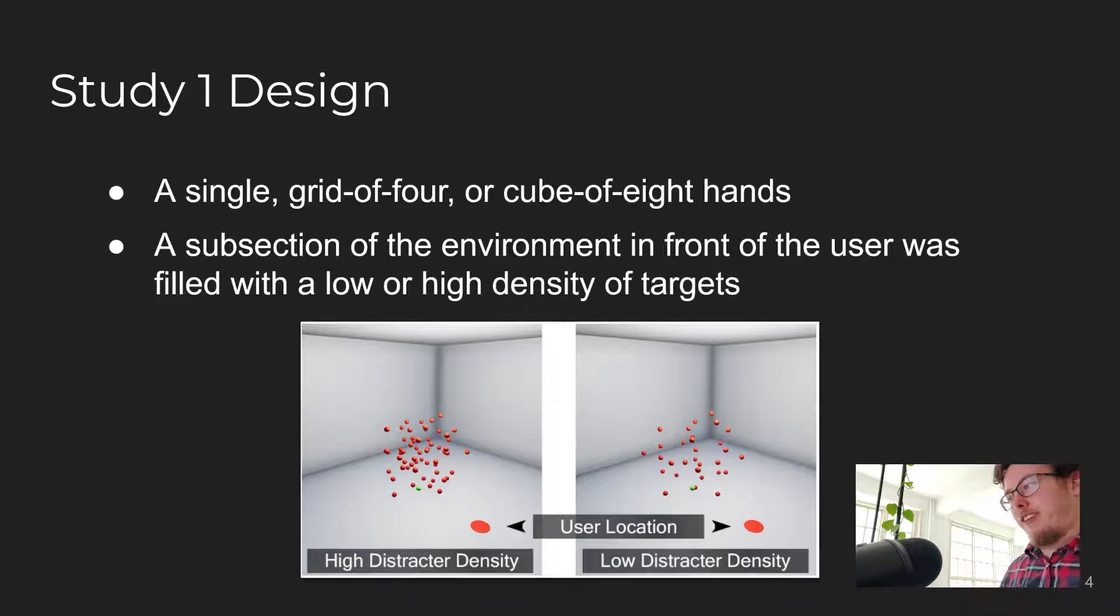In the first study, we compare a single hand against a grid of four and a cube of eight hands in a target selection task. The hands are evenly distributed in a space in front of the user, and the targets are eight spheres in the same space as the hands. The rest of the space is populated with distractors, with a minimum distance between them using Poisson disk sampling. We evaluate both a high and a low density of distractors, defined by the minimum distance between them, as seen in the high density to the left and the low density to the right in this figure.